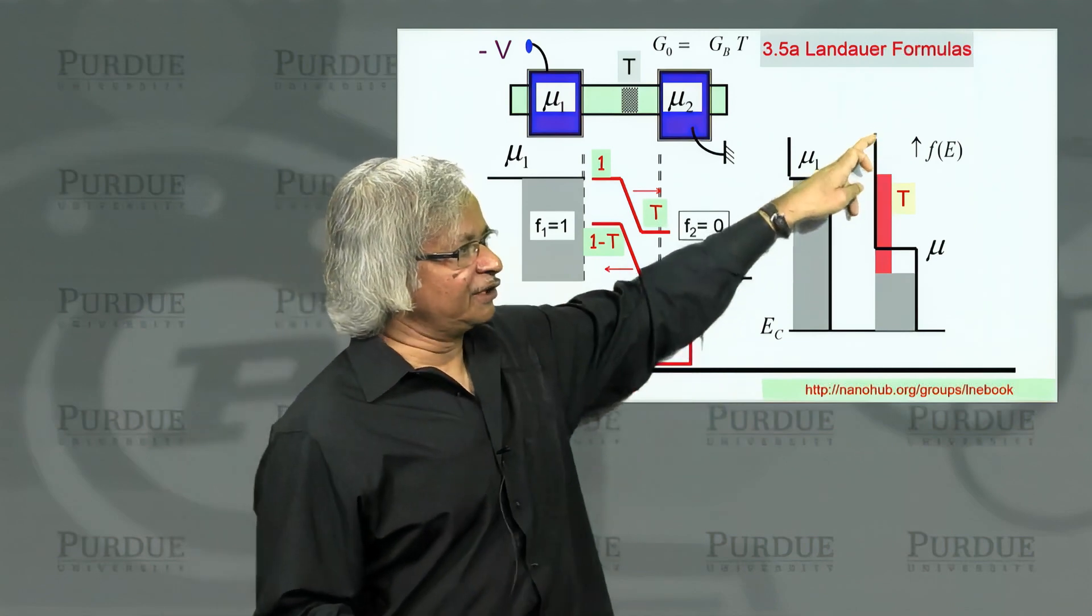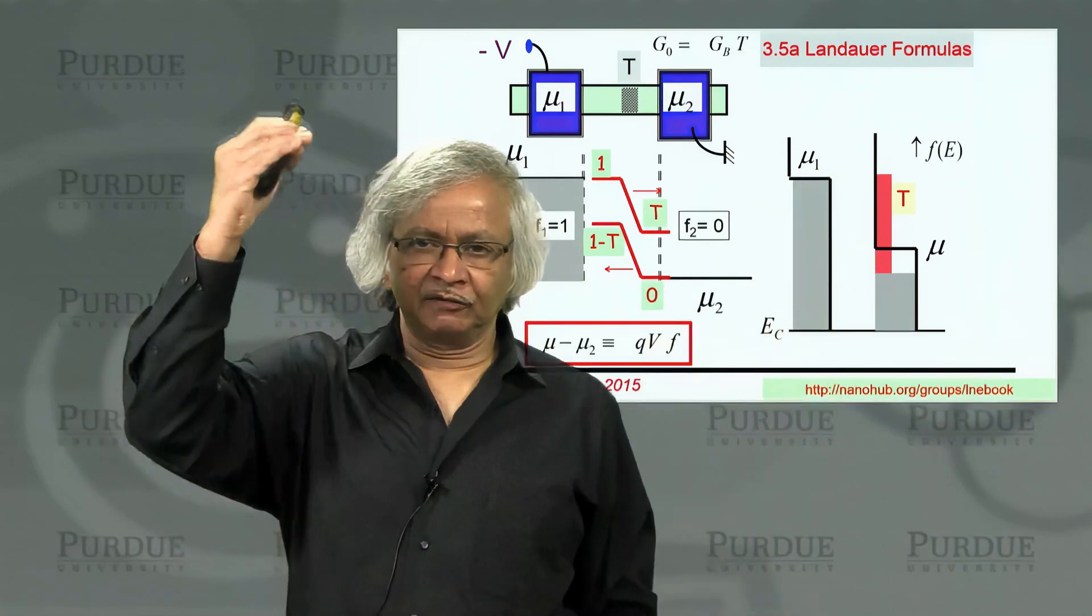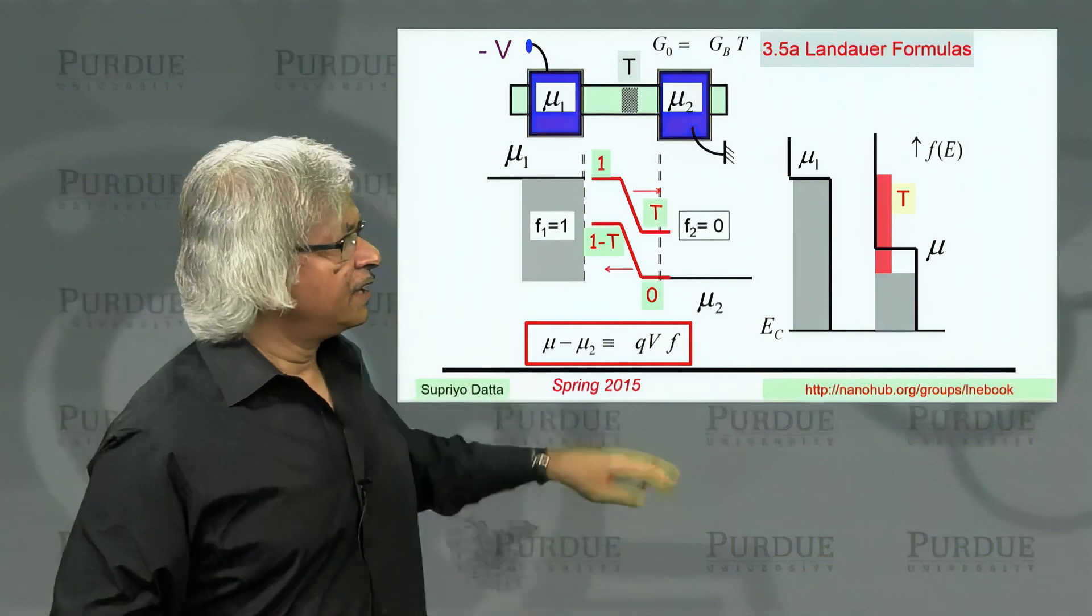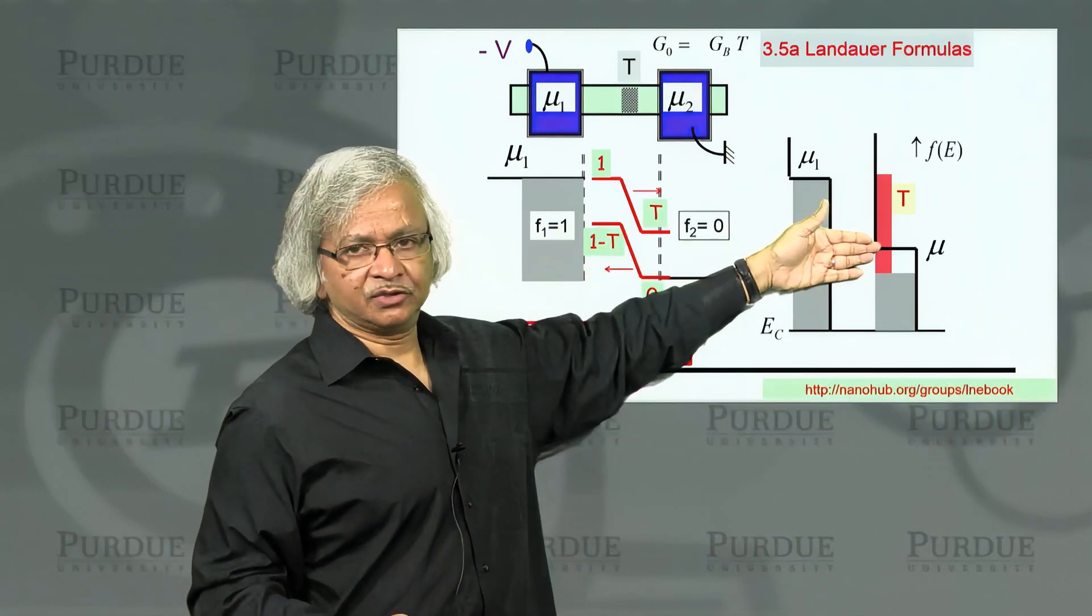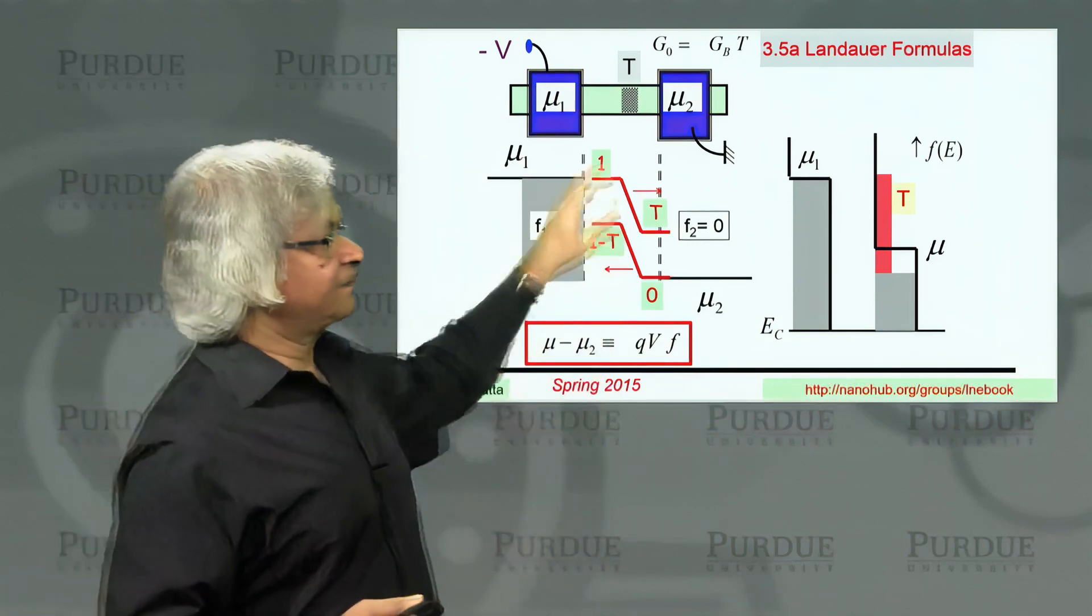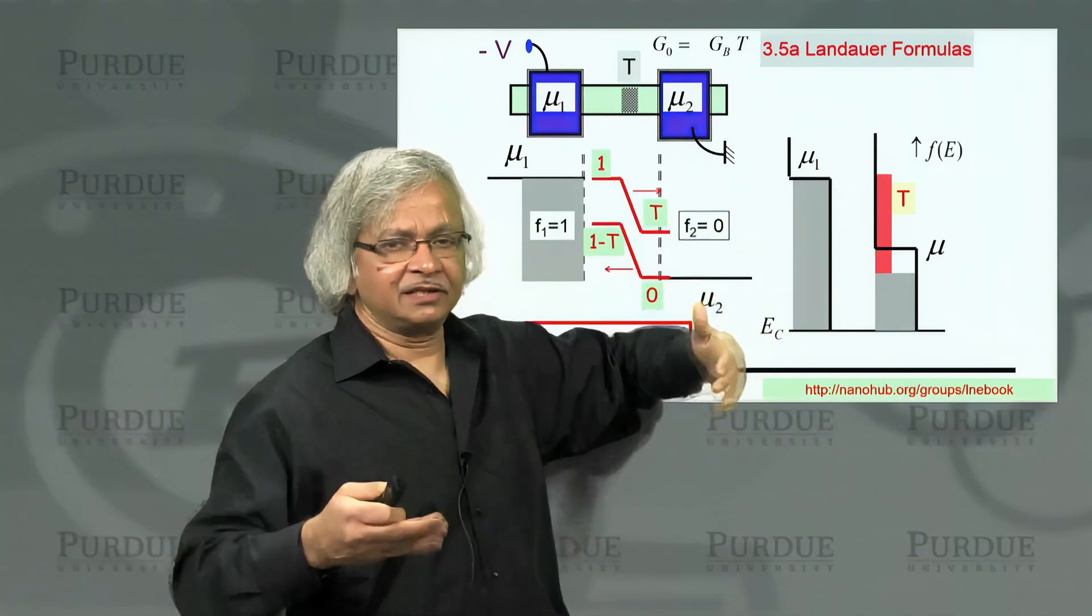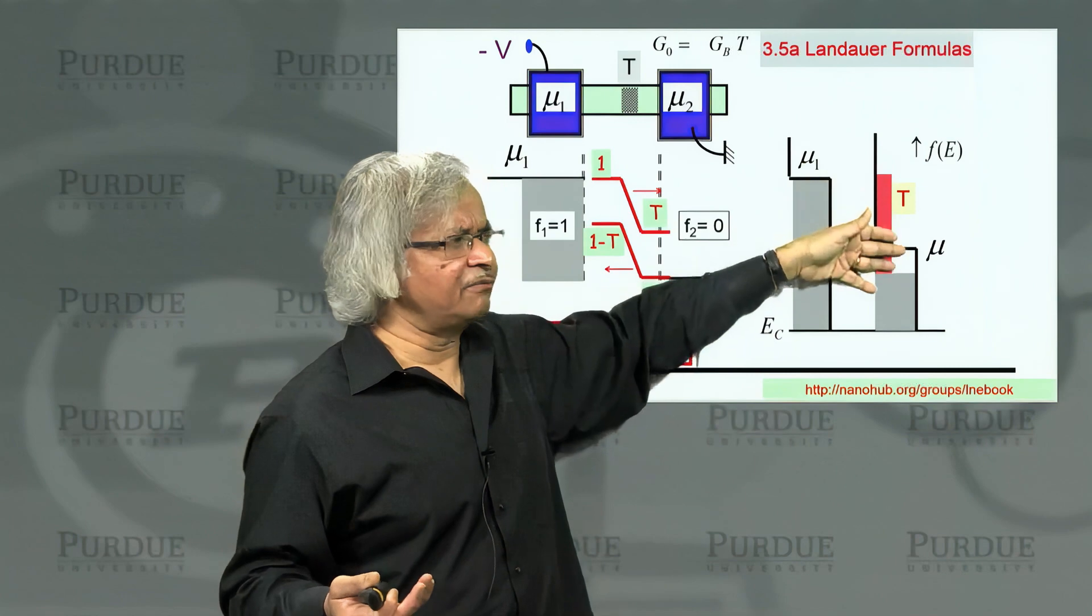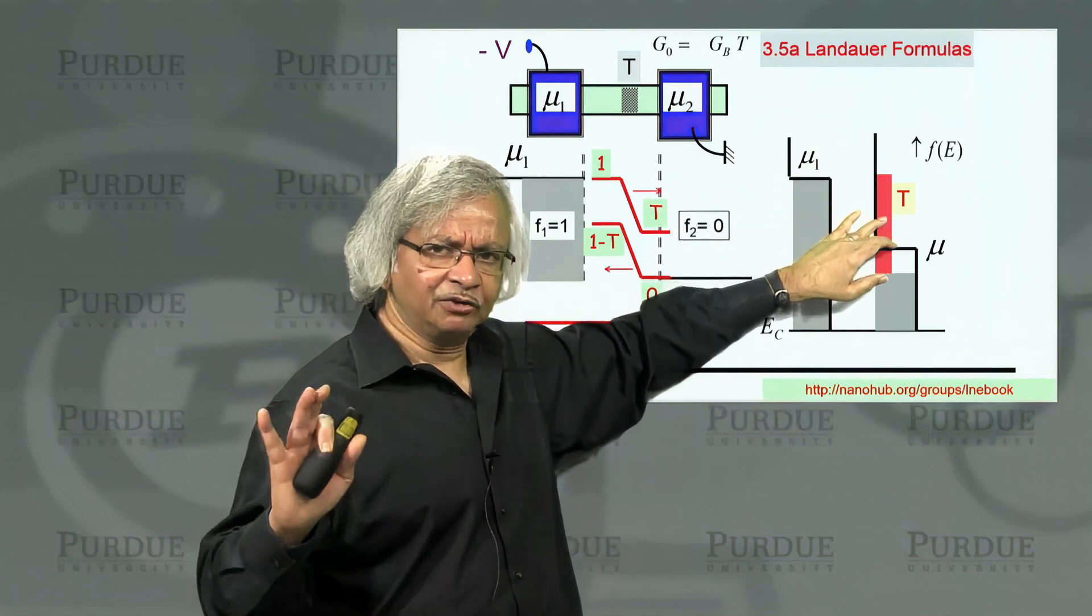When I draw this curve, I'm not implying that the energy is distributed this way, because what the actual energy distribution is depends on inelastic processes. This red distribution is not an equilibrium situation, so there's always inelastic processes trying to take that red and turn it into this black. The actual distribution could be somewhere in between, depending on the degree of inelastic scattering.